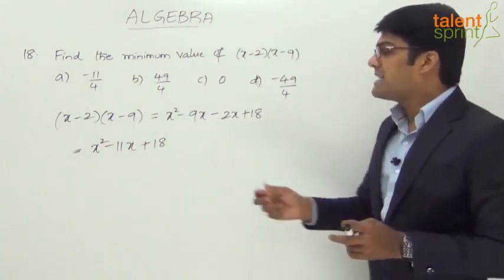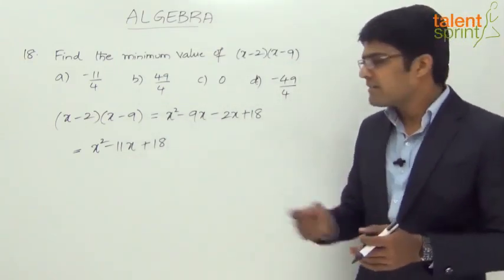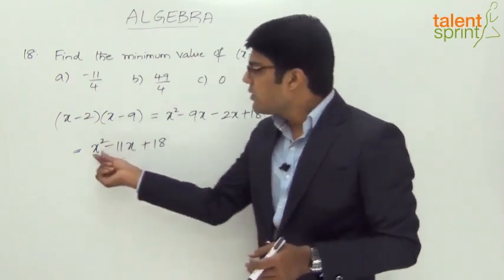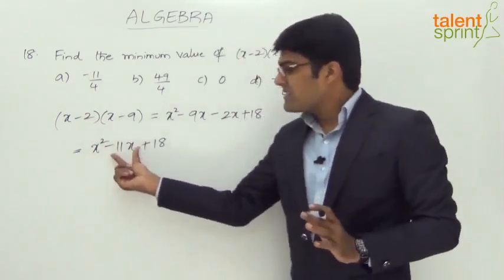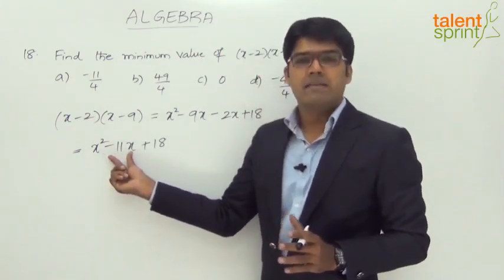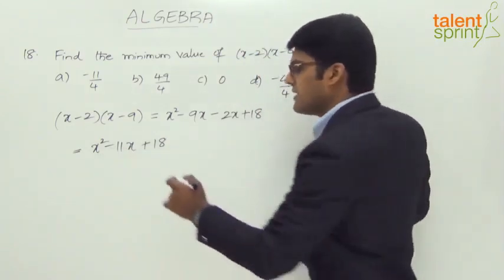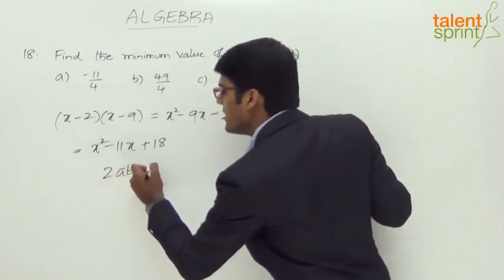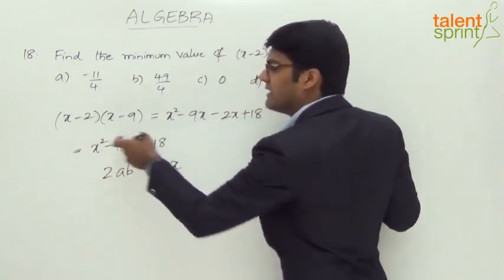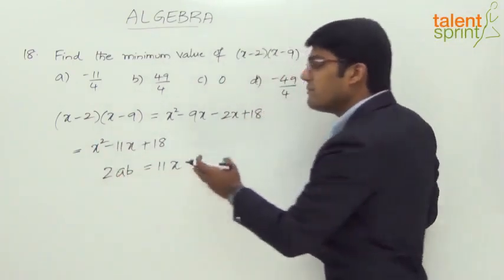All we need to do here is express this in the form of (a plus or minus b) whole square, like we have been doing in the previous questions. We already have the first term as x squared. The second term is minus 11x. Let us take minus 11x as the minus 2ab part. If we assume 2ab equals 11x, where a is nothing but x, then this is in the form of (a minus b) whole square where a equals x and 2ab equals 11x, so b has to be calculated.